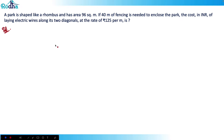Let's look at the next question from geometry from CAT 2021 Slot 3. The question says that a park is shaped like a rhombus and has area 96 square meters. If 40 meters of fencing is needed to enclose the park, find the cost in INR of laying electric wires along its two diagonals at the rate of 125 per meter.